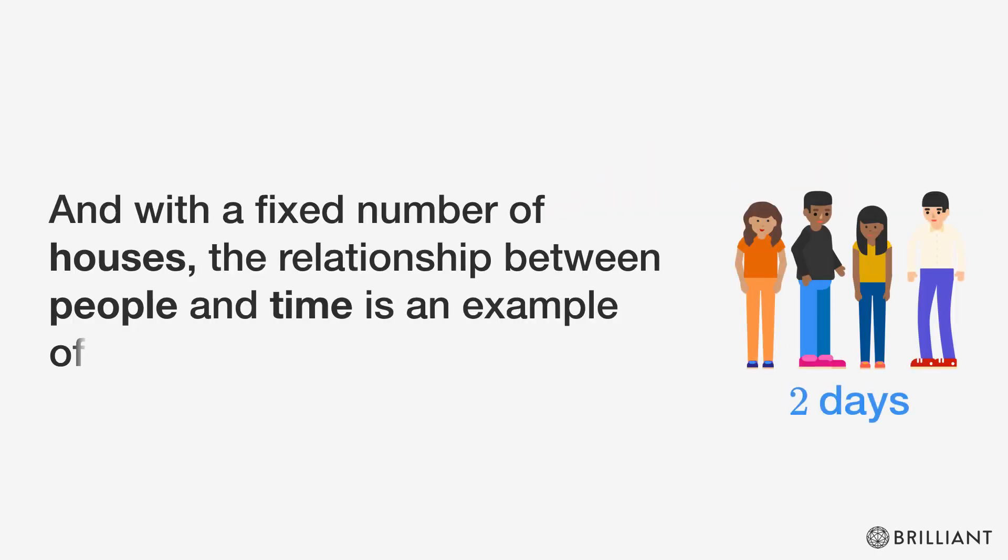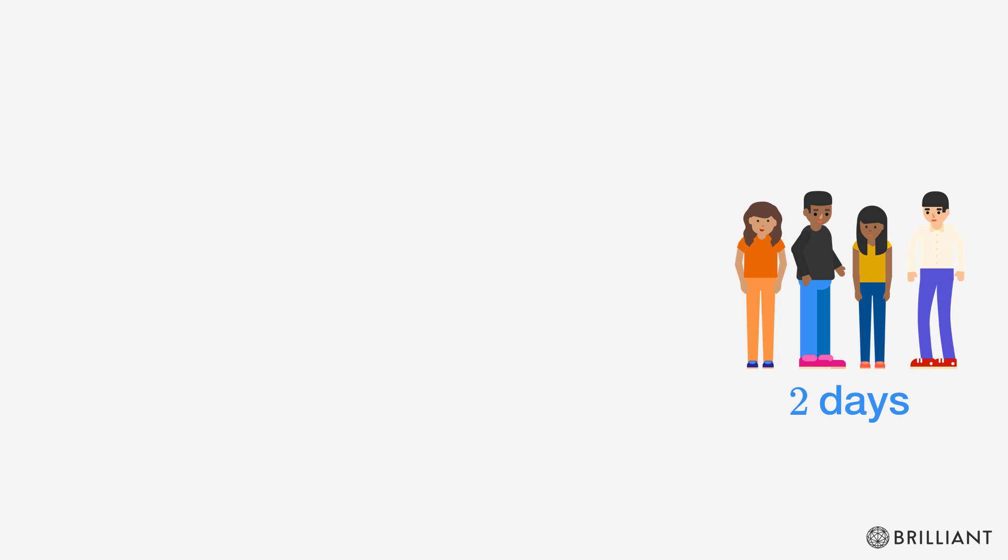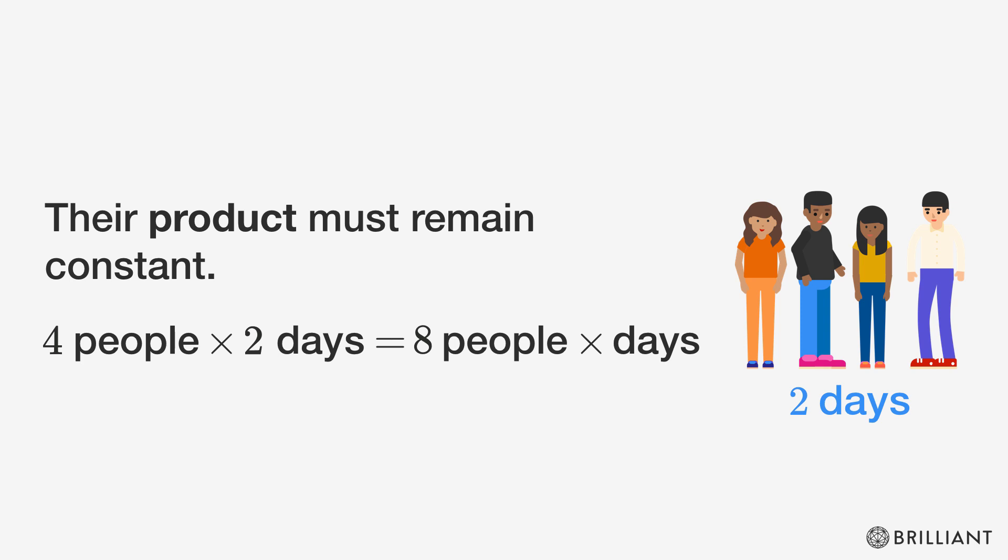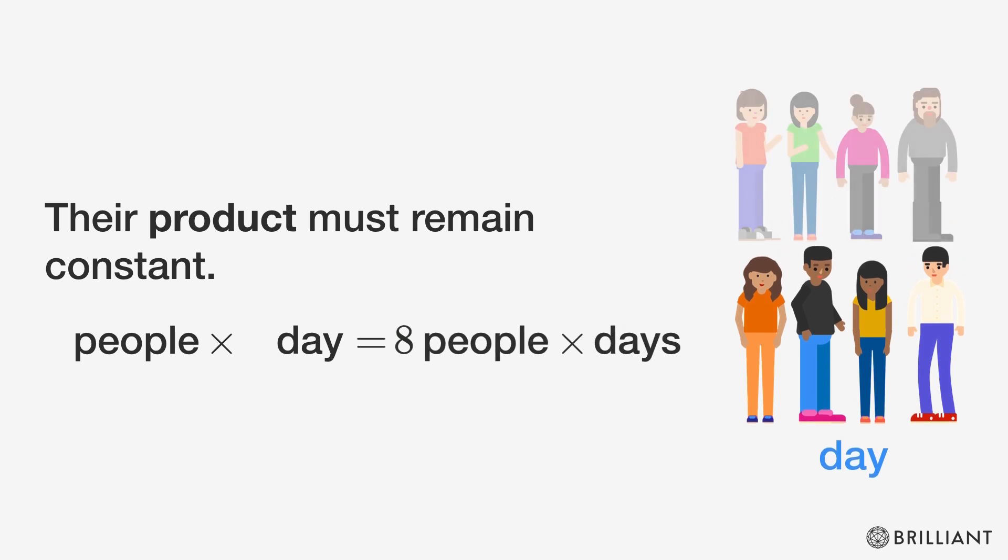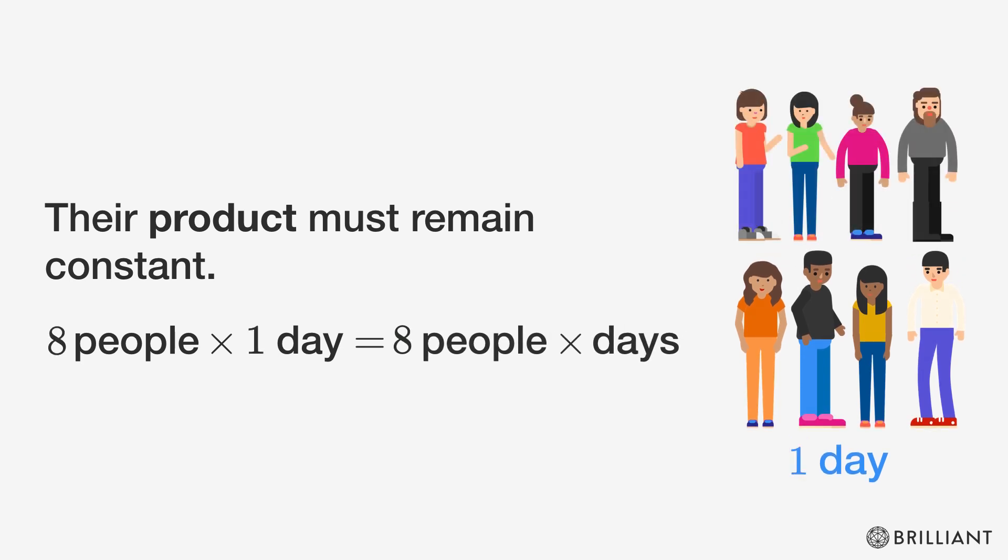And with a fixed number of houses, the relationship between people and time is an example of inverse proportionality. This means their product must remain constant. Four people times two days has the same product as eight people times one day.